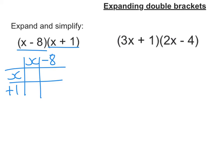Okay, so we're going to have x times x is x squared in here. x times negative 8 goes in here, negative 8x. x times positive 1, which is just x. And then negative 8 times 1, which is negative 8.